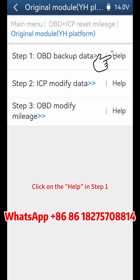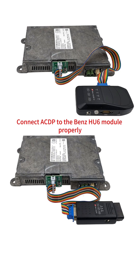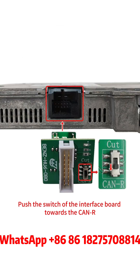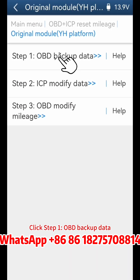Click on the help in step 1. Connect the ACDP to the Benz HU6 module properly. Push the switch of the interface board towards the CAN-R. Click step 1 to OBD backup data.